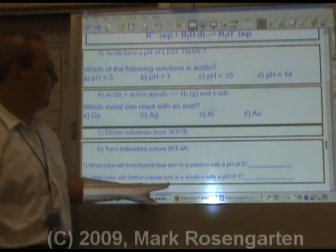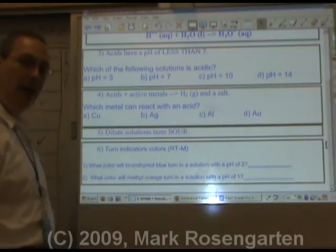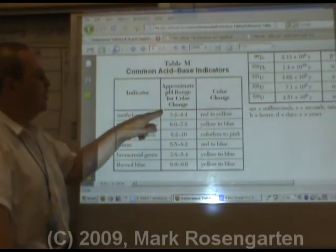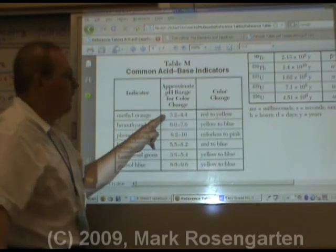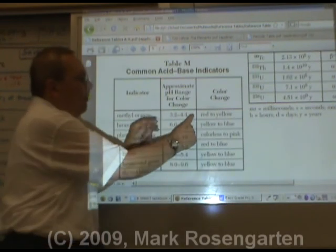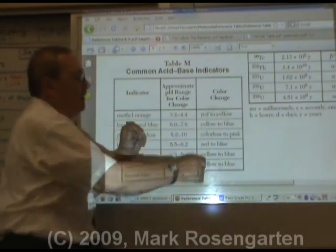What color will methyl orange be in a solution with a pH of 1? Methyl orange in a pH of 1, which is less than 3.2, will be red. If the pH had been 8 or above 4.4, it would be yellow.